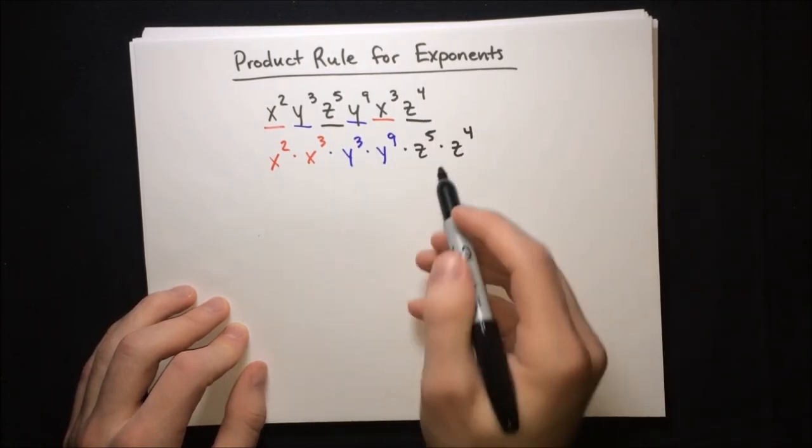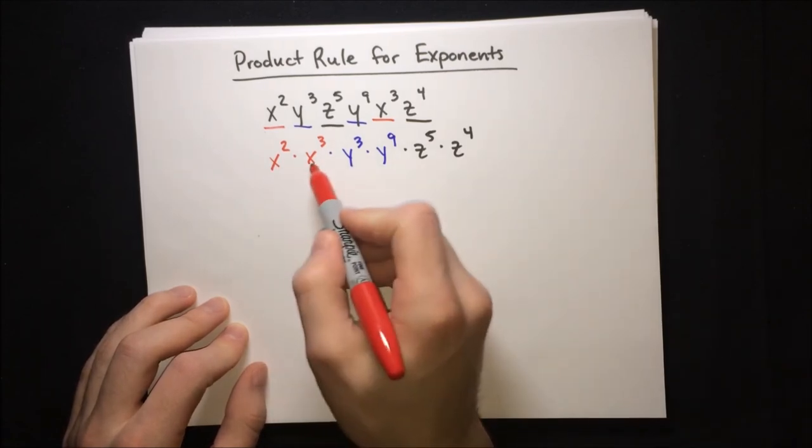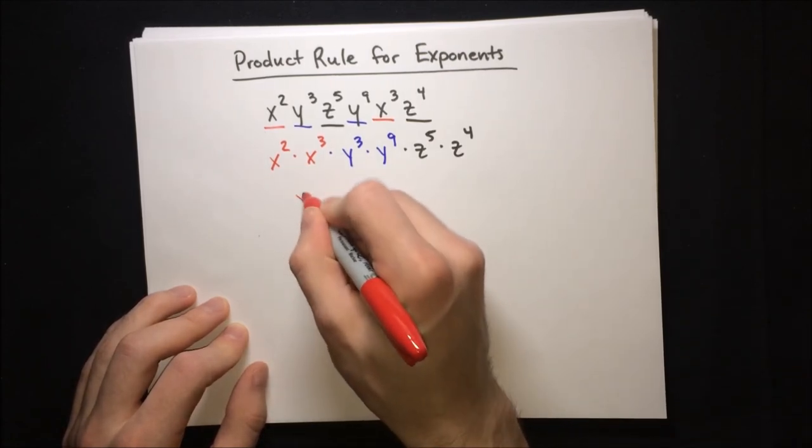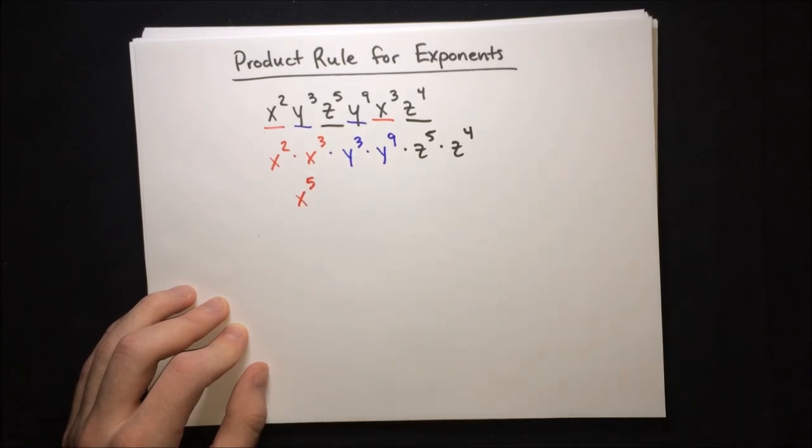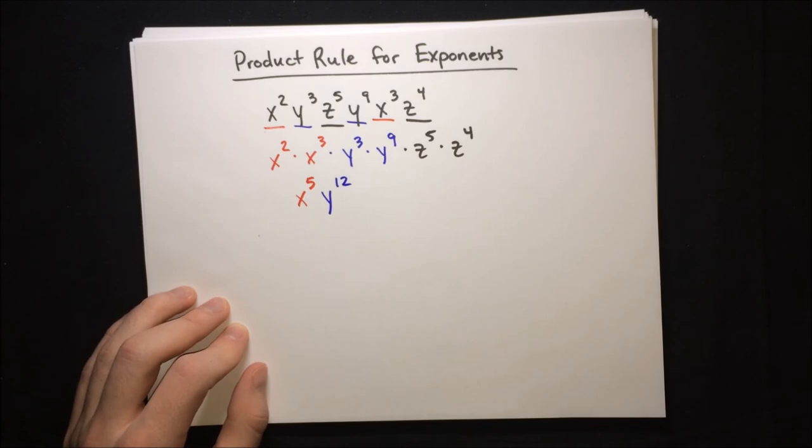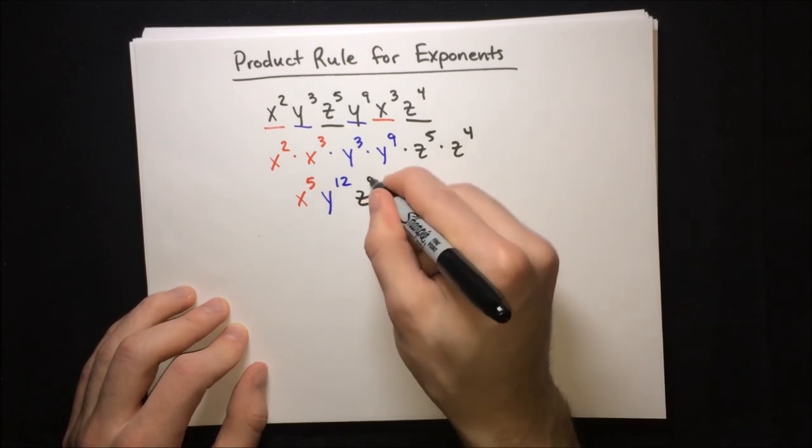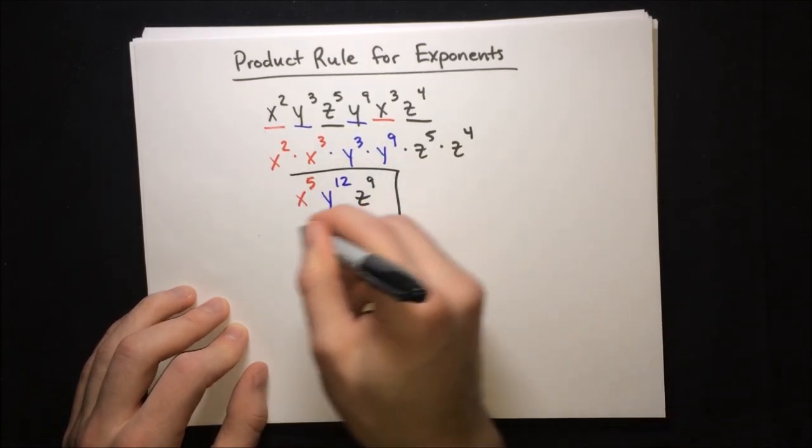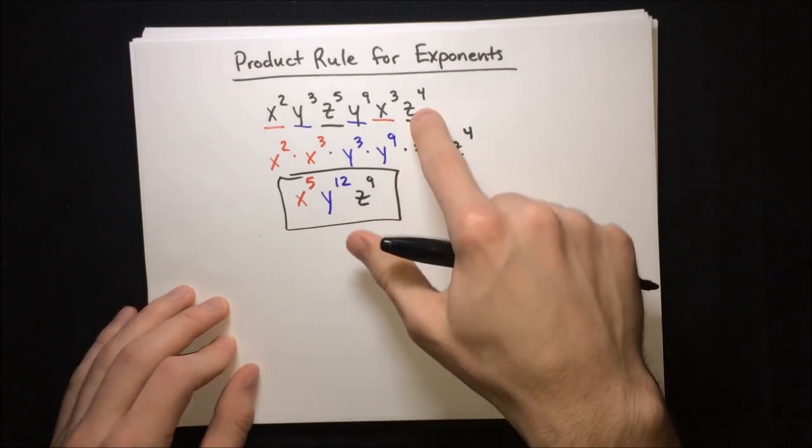And then we can go ahead and multiply each of these. So x squared times x to the third, you just add the exponents to x to the fifth, then y to the twelfth, and then z to the ninth. And that's it. That's the simplified form of that expression.